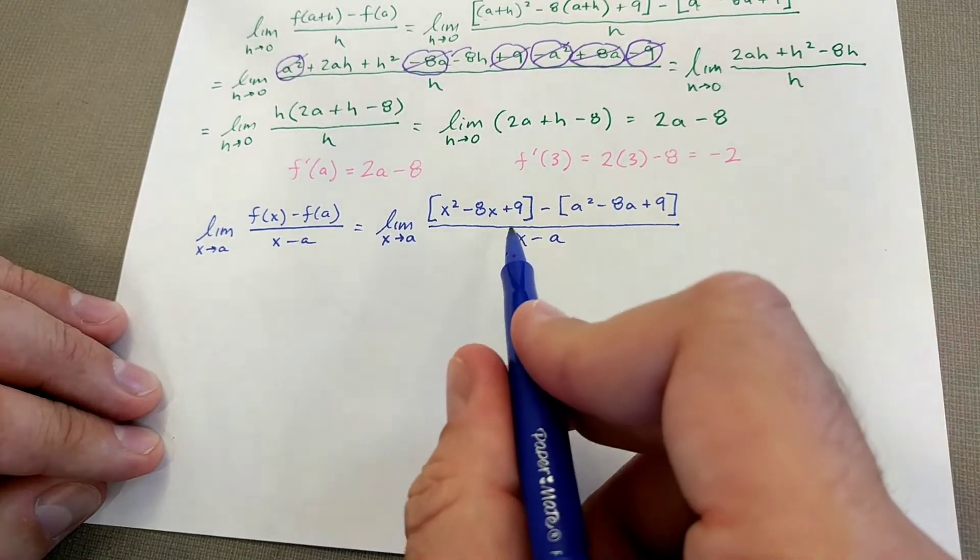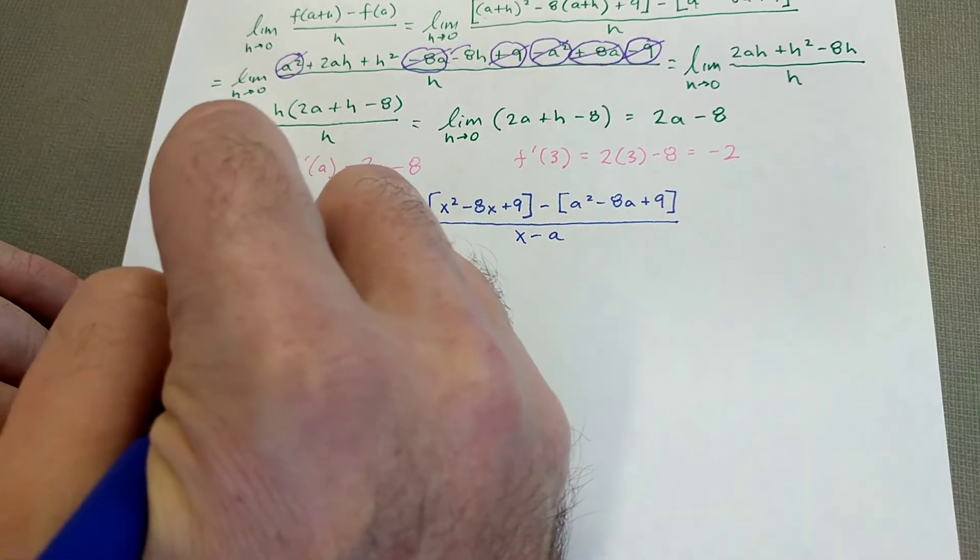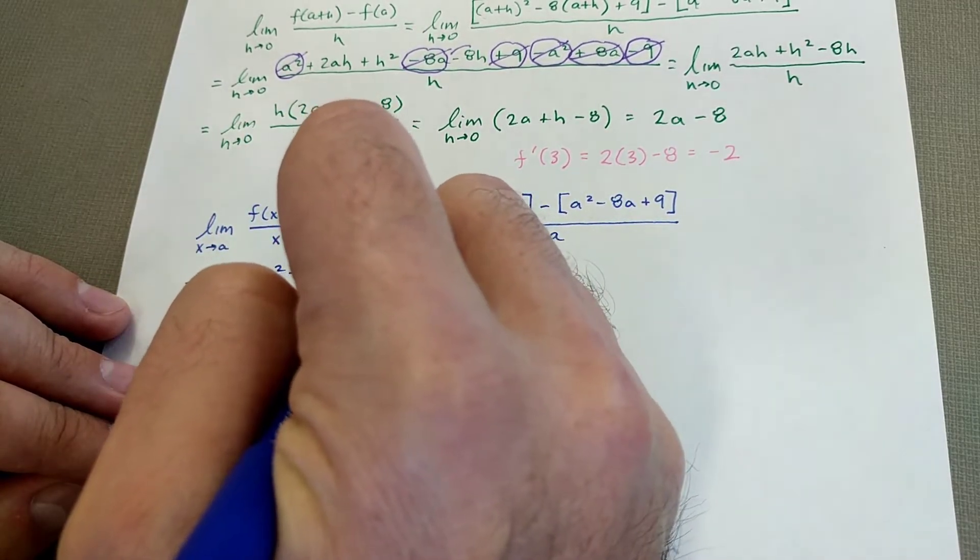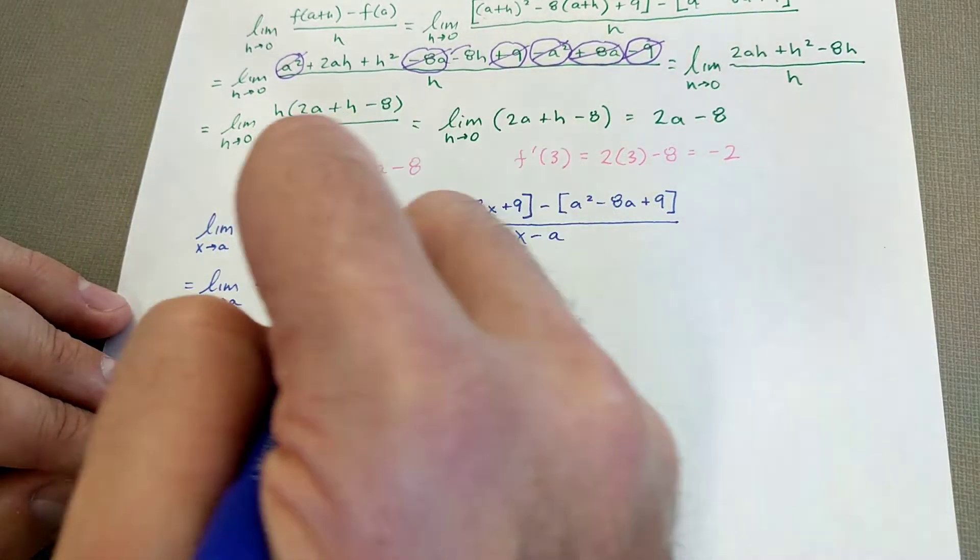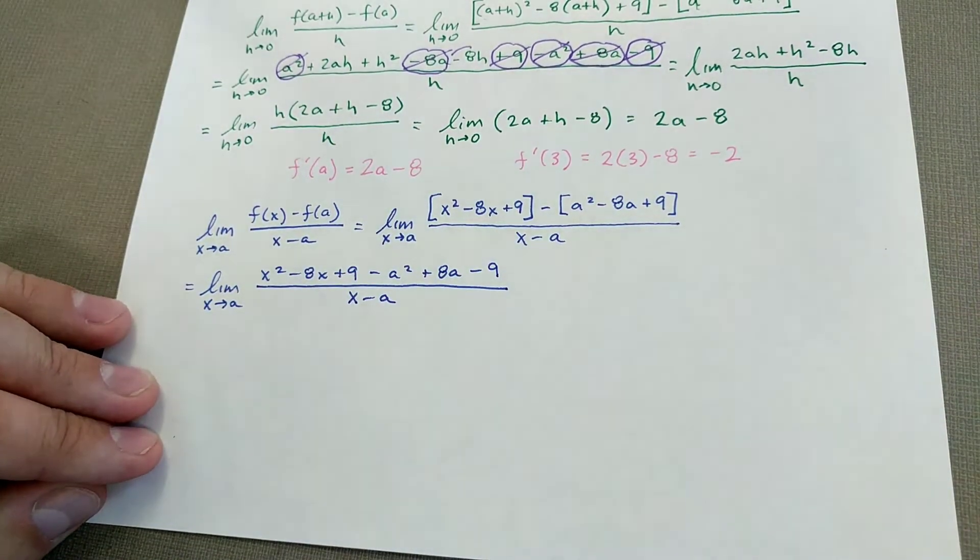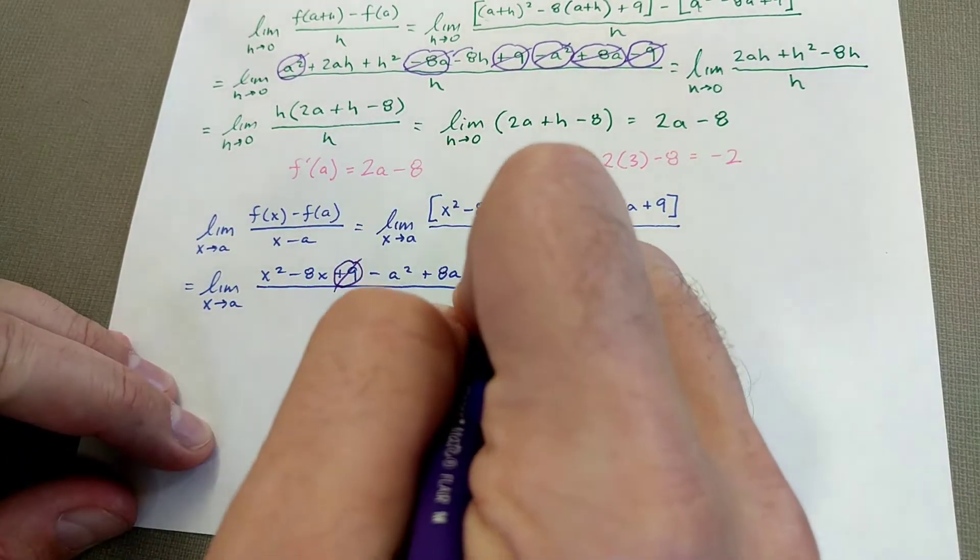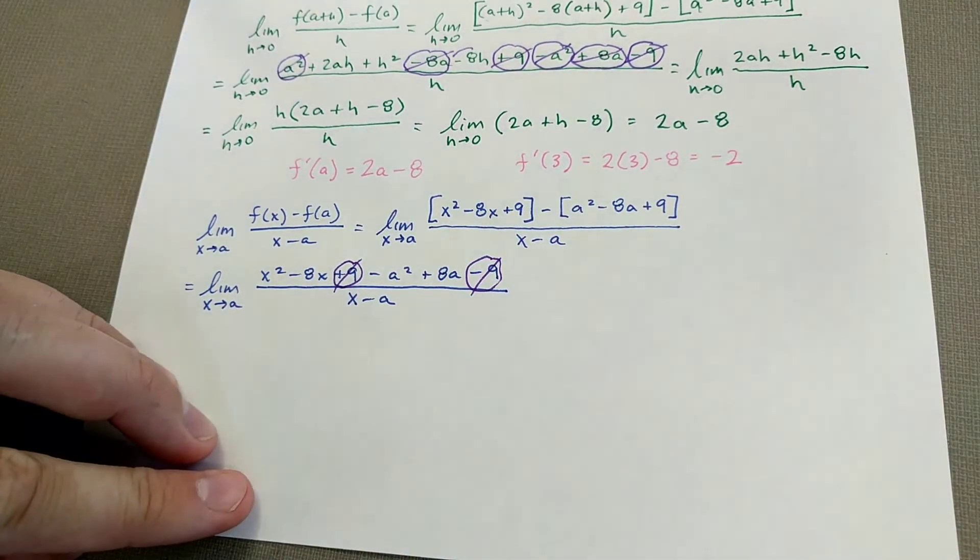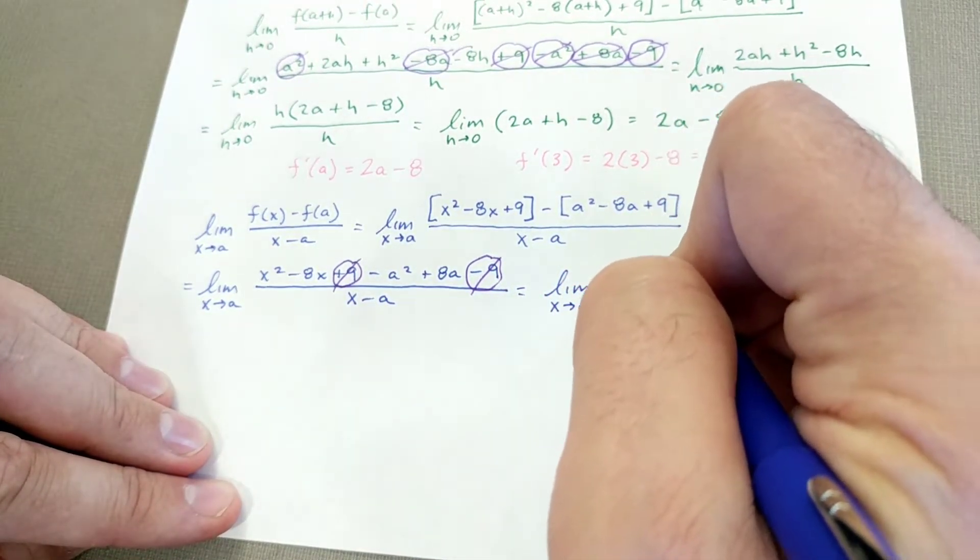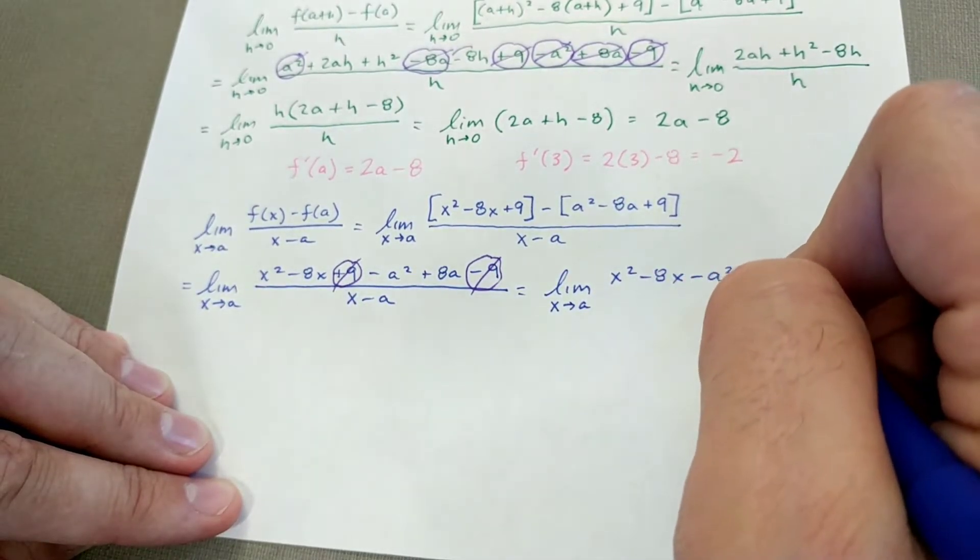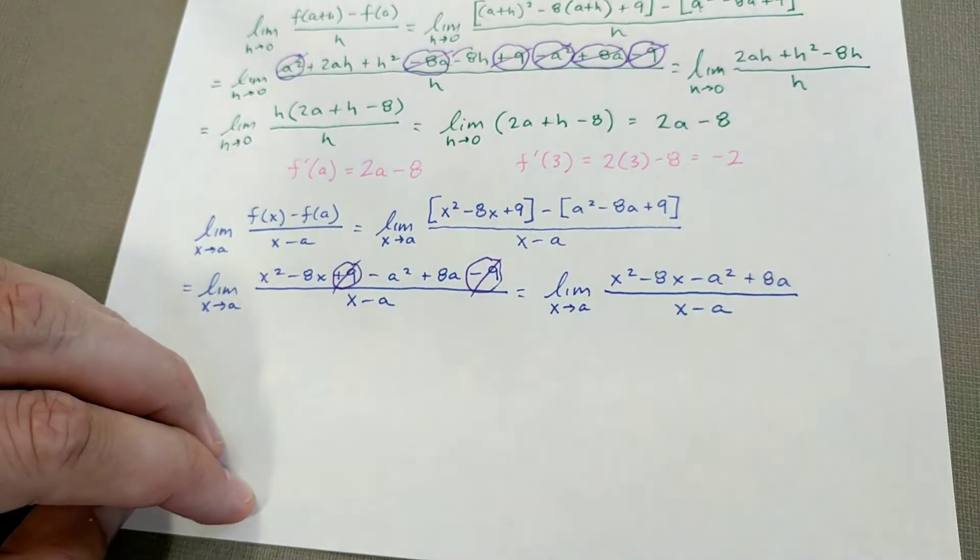So we'll distribute that negative now. So the limit as X approaches A of X squared minus 8X plus 9 minus A squared plus 8A minus 9 all over X minus A. So just like in the previous one, we do have a couple of things that we'll add to 0. Positive 9, negative 9. So what are we left with? We have the limit as X approaches A of X squared minus 8X minus A squared plus 8A all over X minus A.